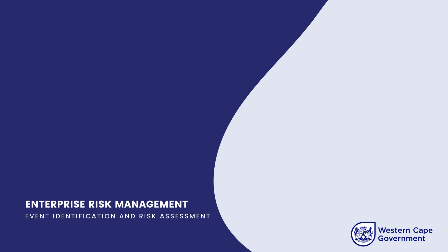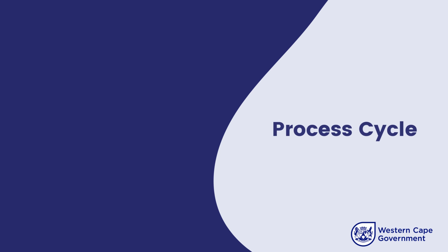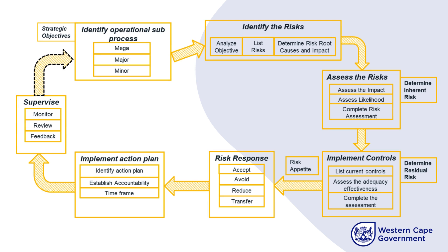Welcome back. In this video we will be taking you through the event identification and the risk assessment process. This process begins with a diagram that illustrates the continuous cycle for identifying potential events within processes — new, emerging, or existing — and performing an assessment on these events to determine the impact on objectives.